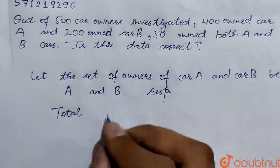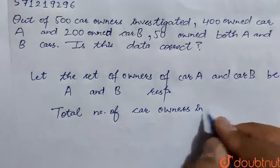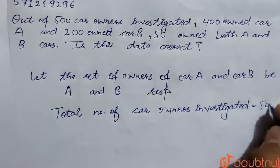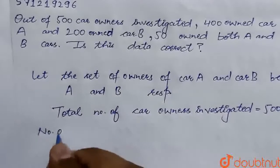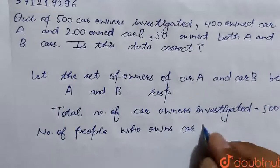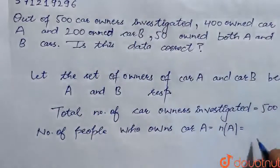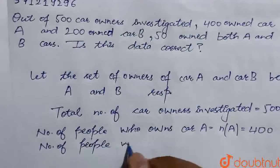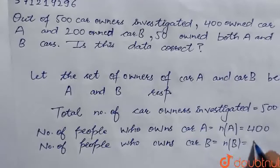Firstly, we will write the given things. The total number of car owners investigated is 500. The number of people who own car A, represented as N(A), is equal to 400. Also, the number of people who own car B, represented by N(B), is equal to 200.